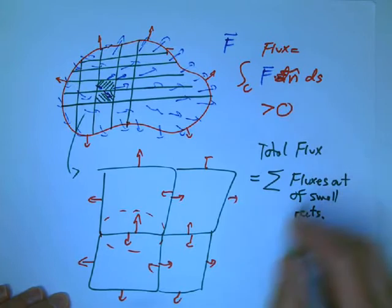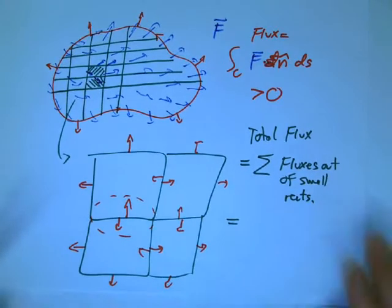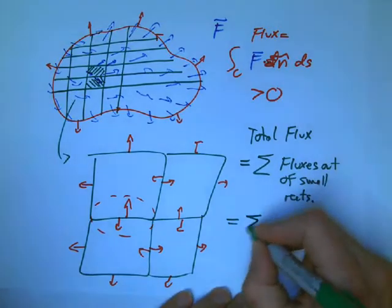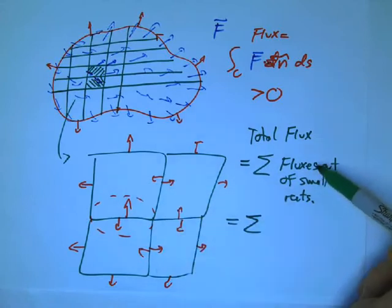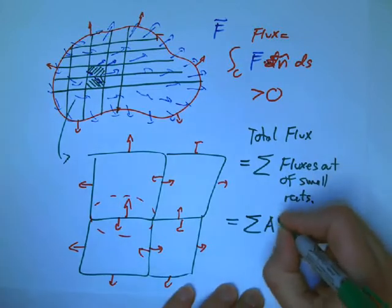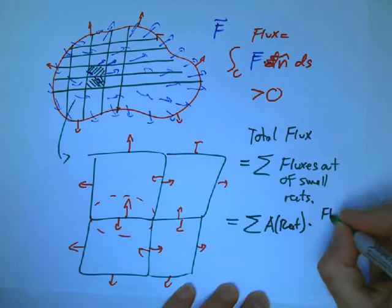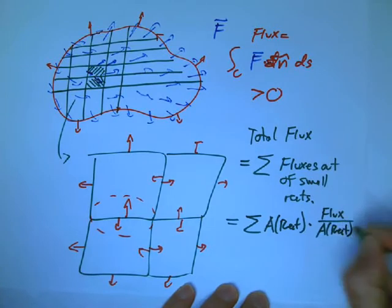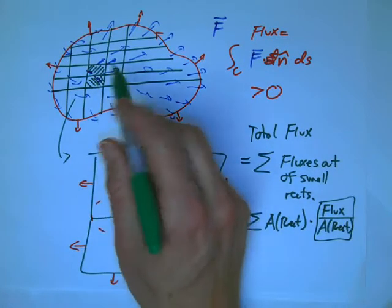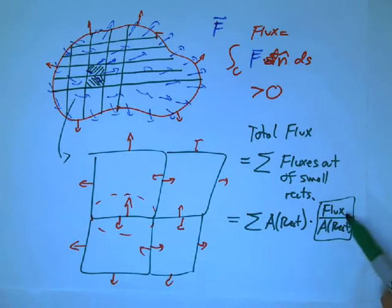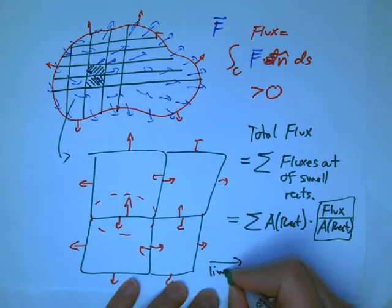And so, the total flux is going to be the sum of the fluxes out of all the small rectangles. And the story is very similar. Maybe we can try this a little bit on the applet when we're back in class. It's that if you make the rectangle small and you just calculate the flux out of each small rectangle, as the size of the rectangles goes to zero, those fluxes are going to go to zero. That's not interesting.